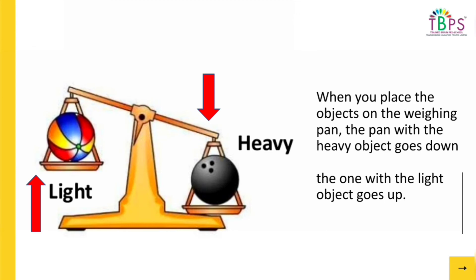How do we do the comparison? When you place two objects on the weighing pan, the pan which has the heavy object goes down, and the one with the light object goes up. Yes, this is the science behind it.